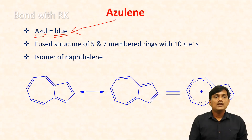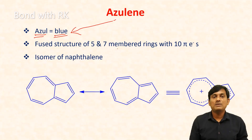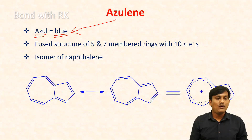Azulene has two rings — one is a five-membered ring and another one is a seven-membered ring. The five-membered ring has two pi bonds and the seven-membered ring has three pi bonds. Finally, in azulene you have ten pi electrons.